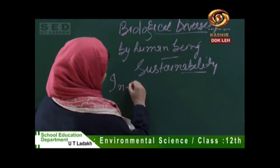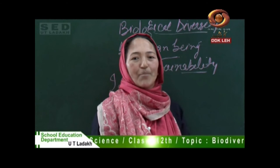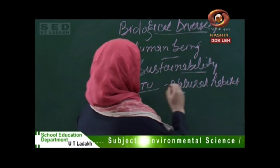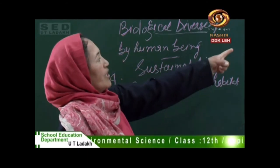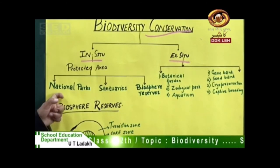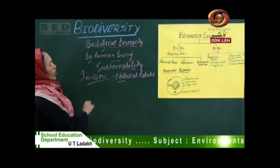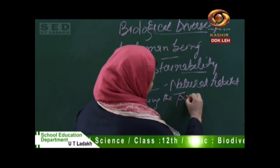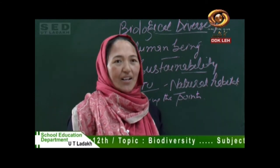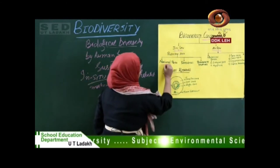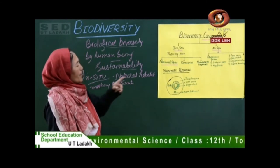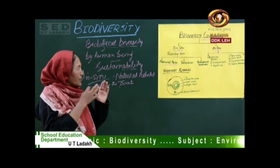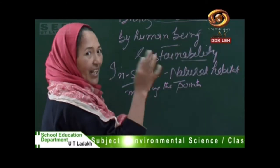What do we mean by in-situ conservation? In in-situ conservation, conservation happens within the natural habitat. Within in-situ conservation we can find national parks, sanctuaries, and biosphere reserves. Under in-situ conservation, a national park is designated by the government to protect particular animals and plants, so those plants or animals will be conserved for the future.